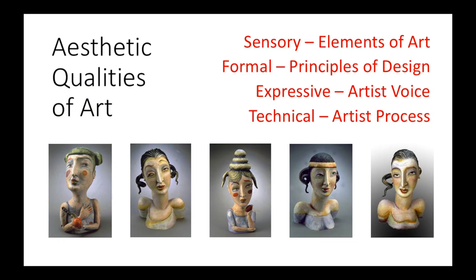Now let's introduce the four aesthetic qualities of art. They are sensory, formal, expressive, and technical. Sensory qualities refer to the elements of art, such as line, form, and color. Formal qualities refer to the principles of design, such as pattern, emphasis, and rhythm. Expressive qualities refer to the artist's voice, and technical qualities refer to the artist's approach. Let's look at each of these qualities in greater detail.